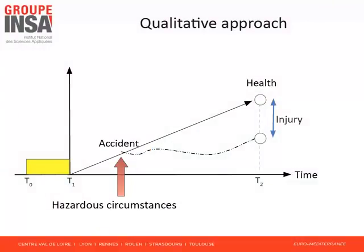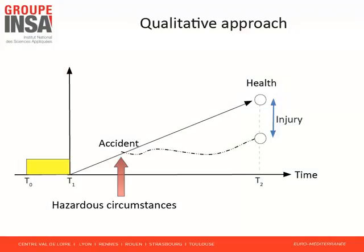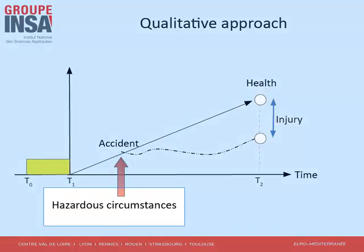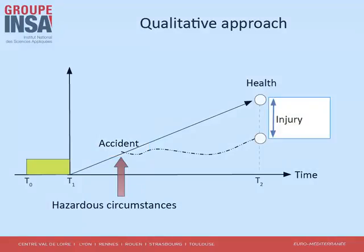As far as safety is concerned, the objective is the preservation of health. People perceive causes that may hinder the achievement of this objective in a negative way. The generic term 'hazardous circumstances' is used to refer to these causes. Effects are called accidents, and consequences on health are called injuries, including death as a fatal injury.